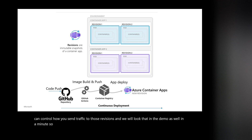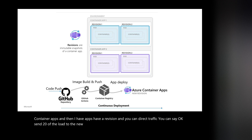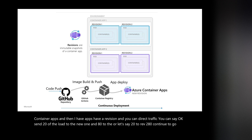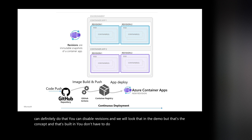Container apps have revisions and you can direct traffic. You can say, send 20% of the load to the new revision and 80% to the old one — rev2 gets 20%, rev1 gets 80% — and then you can slowly change. This is like a blue-green deployment. You can disable revisions, and that's built in. You don't have to do anything — it is built in as part of container apps.